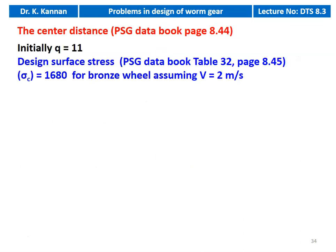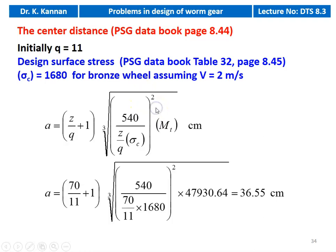We calculate the center distance. For calculating center distance, we require the diametral factor Q equal to 11. Design surface stress from table 32, page 8.45: sigma_c = 1680 for bronze, assuming sliding velocity V = 2 m/s. Calculating center distance: A = (Z/Q + 1) × cube root of [540 / (Z/Q × sigma_c)² × MT_design] = (70/11 + 1) × cube root of [540 / (70/11 × 1680)² × 47,930.64] = 36.55 cm.